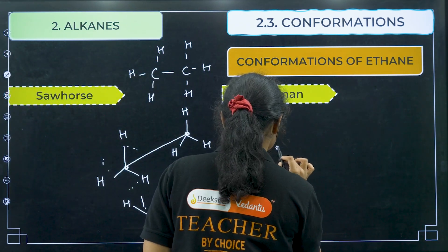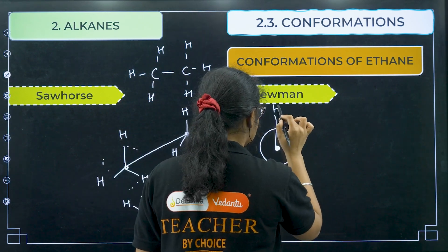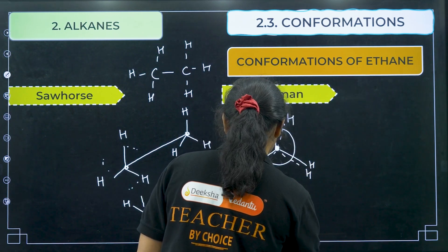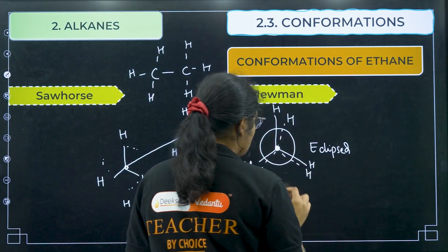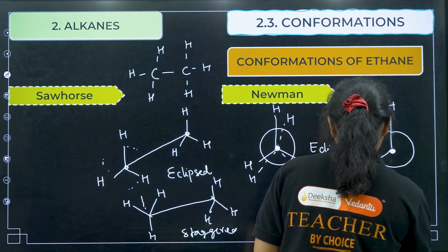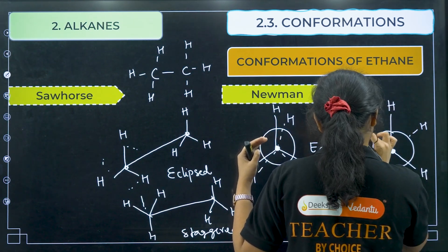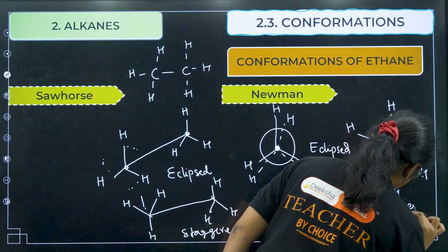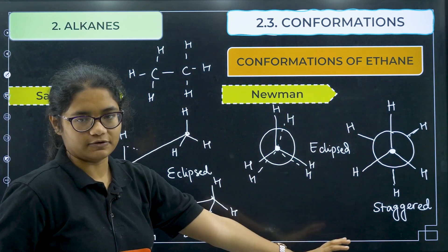In Newman projection, the two carbons are represented — one with a dot and one with a circle. The front carbon has three hydrogens shown as lines, and the back carbon also has three hydrogens. When the back hydrogens are directly behind the front ones, that is the eclipsed form. When the back carbon is rotated so the hydrogens are offset, that is the staggered conformer. So this is how you represent sawhorse and Newman conformers of ethane.